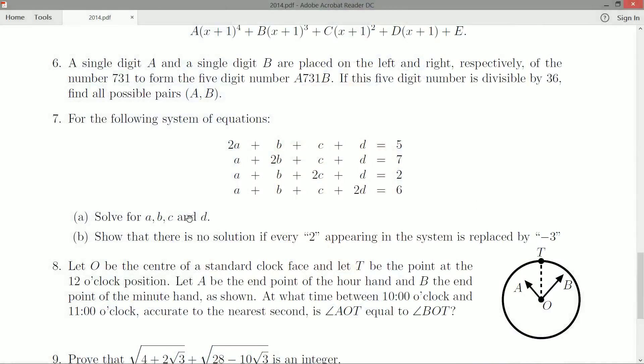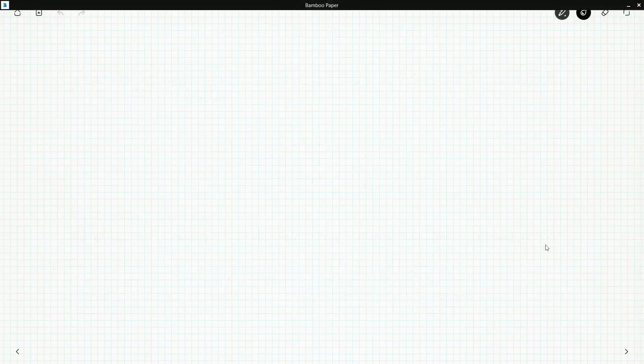Let's get back to reading our question. A, solve for a, b, c, and d. That's not going to be that hard. But now b part, we have a little twist here. Show that there is no solution if every 2 in the system is replaced by a negative 3. If you knew linear algebra, you could take a matrix here and probably show something like a determinant or put it in row reduced echelon form. But we're going to find a regular old system of equations technique for showing that the minus three won't work.